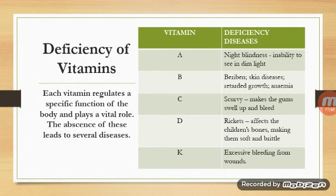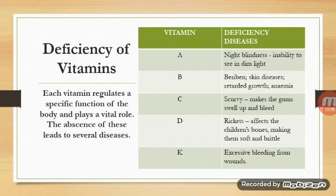Deficiency of Vitamin D causes rickets, which affects children's bones, making them soft and brittle so that even a small injury can cause a fracture. Deficiency of Vitamin K leads to excessive bleeding from wounds, as the blood clotting process is slow and blood is lost quickly from even a small cut.